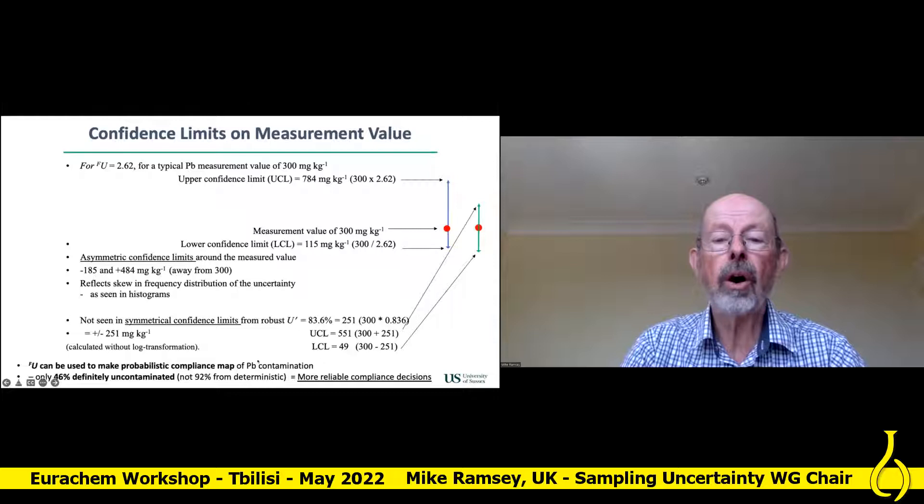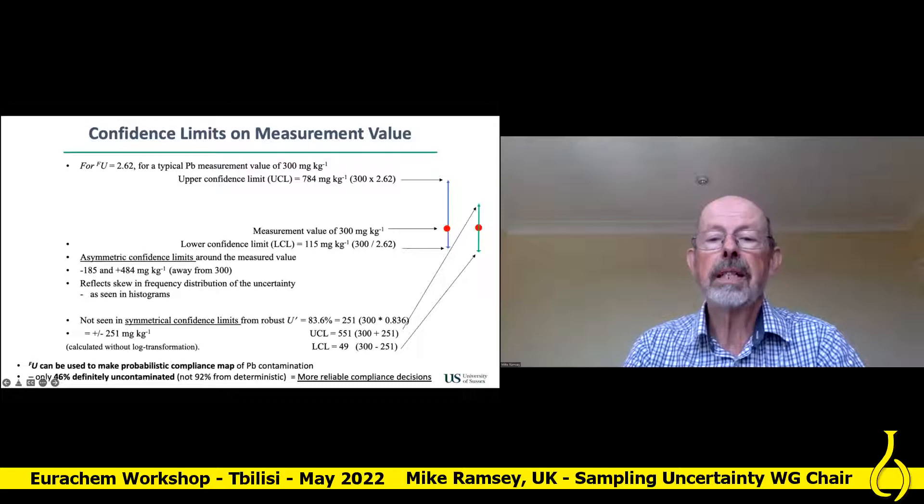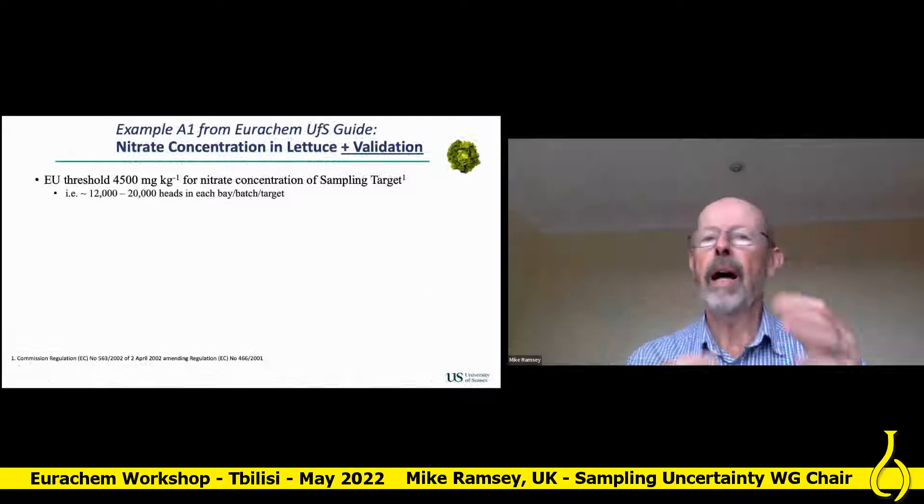Ricardo and I have used this to make probabilistic maps of lead contamination across this site. It turns out that instead of being 92% uncontaminated, it's only definitely 46% uncontaminated — so it's more than likely to be contaminated — and so you can make more reliable compliance decisions.